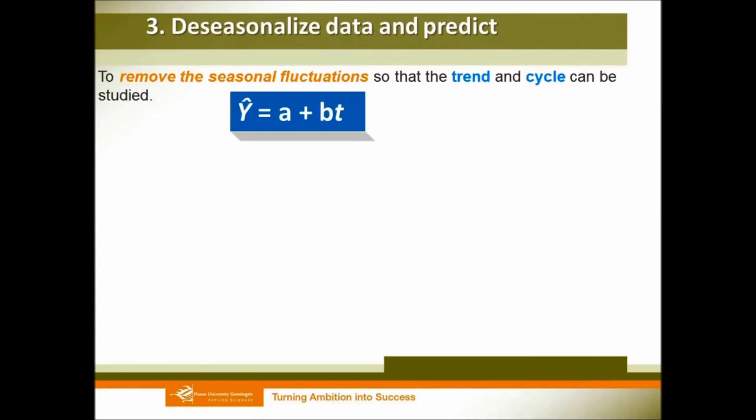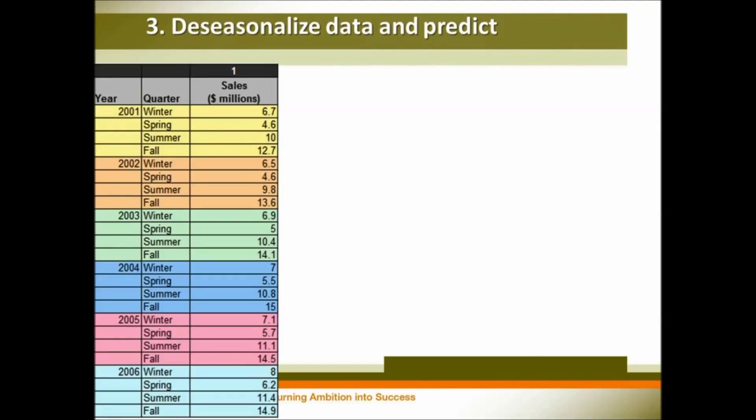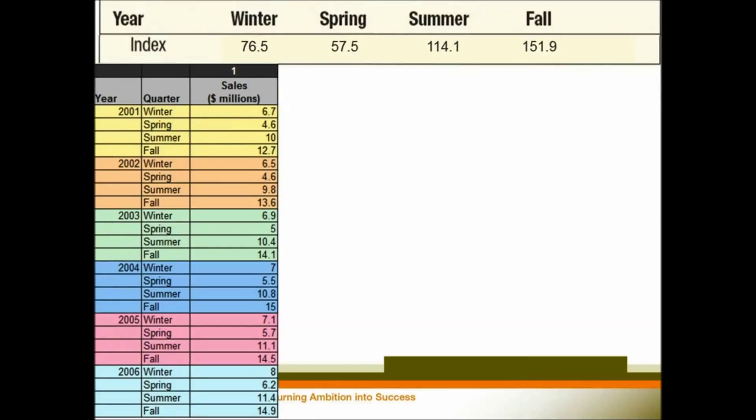And we use this equation, y hat equals a plus b times t. T represents time. So the first step, we need to deseasonalize our data. So for the winter sales, we use our winter index. We use the real sales divided by the winter index, and we get this number, 8.759.